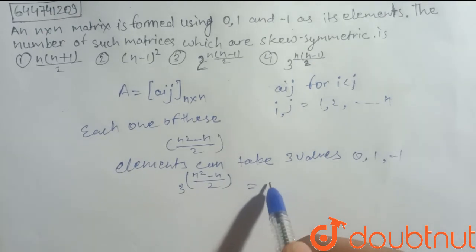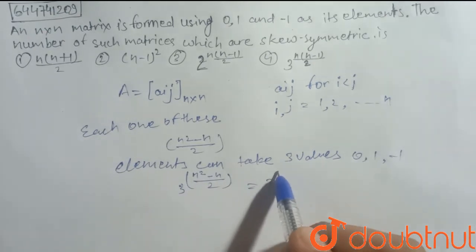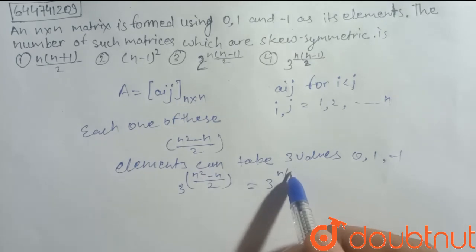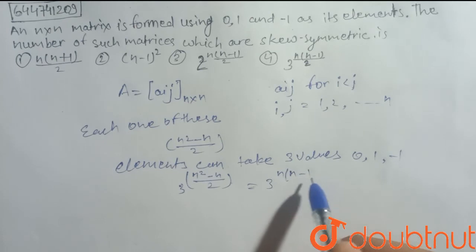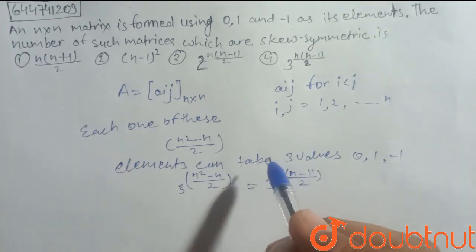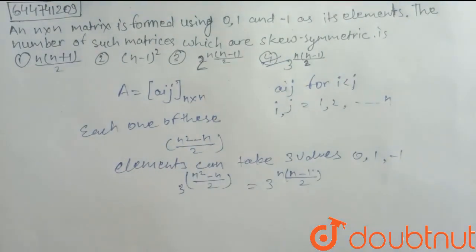So here we take n common, giving us n times n minus 1 by 2. So our answer is option number D. Thank you.